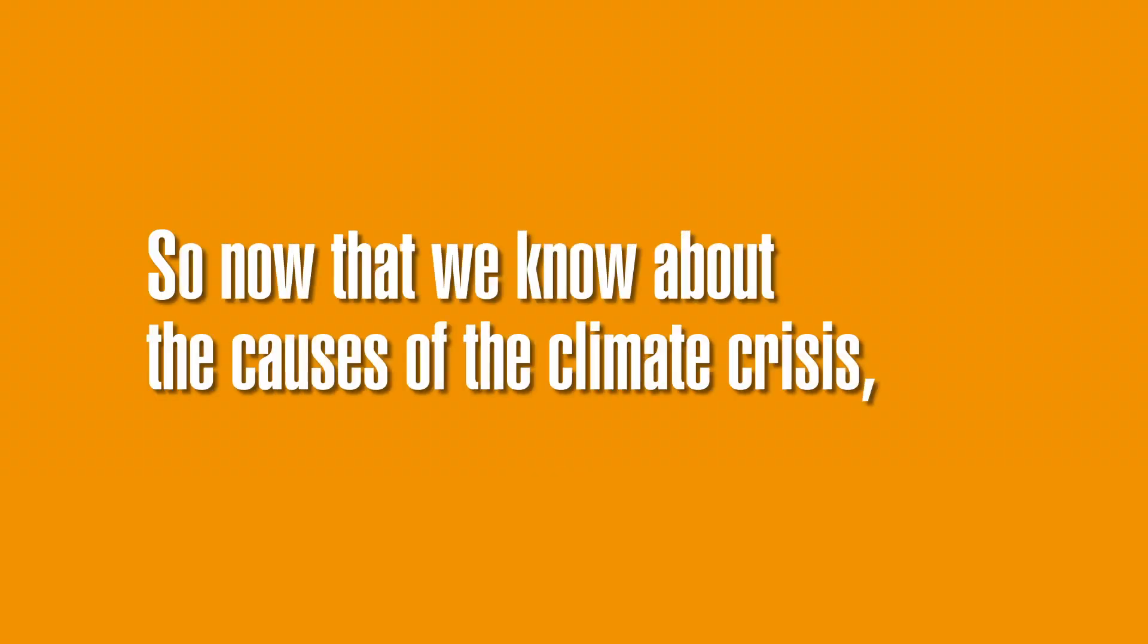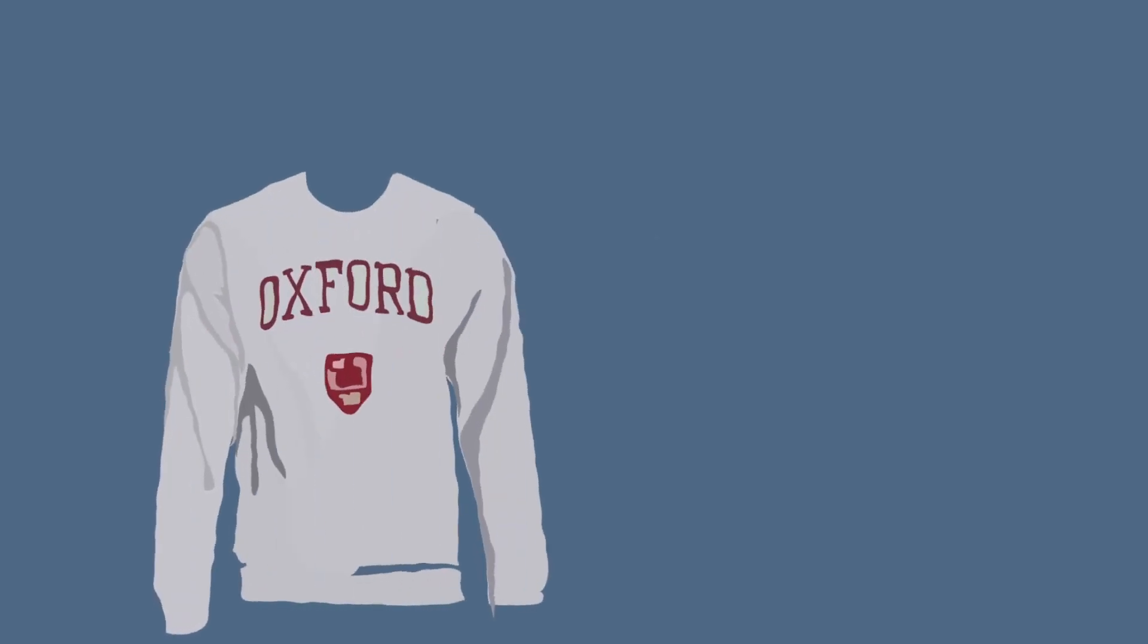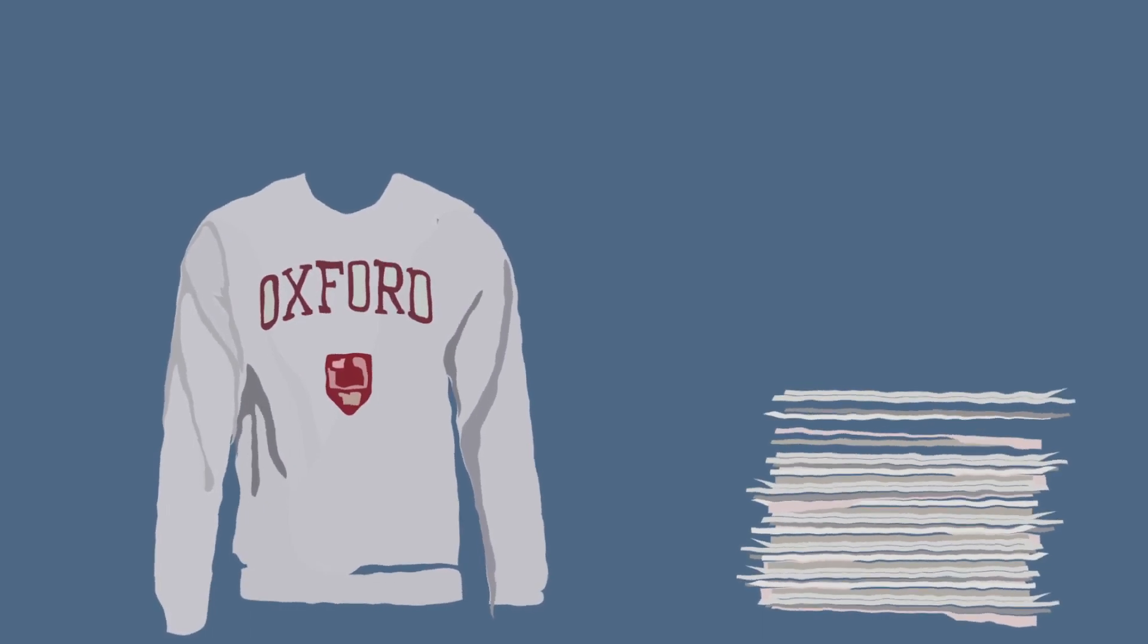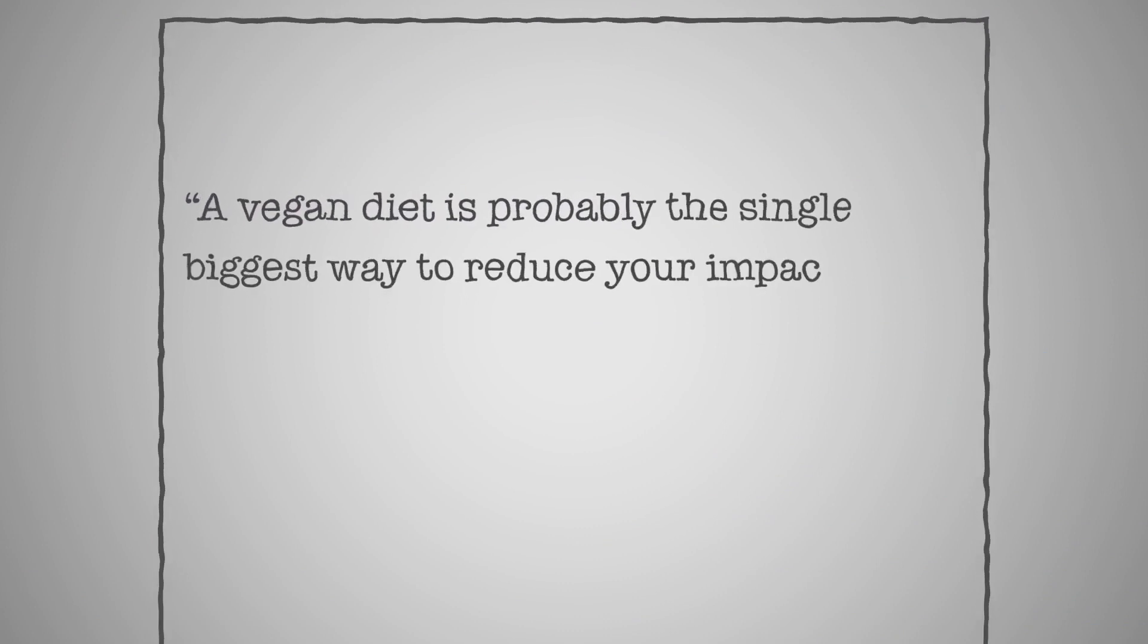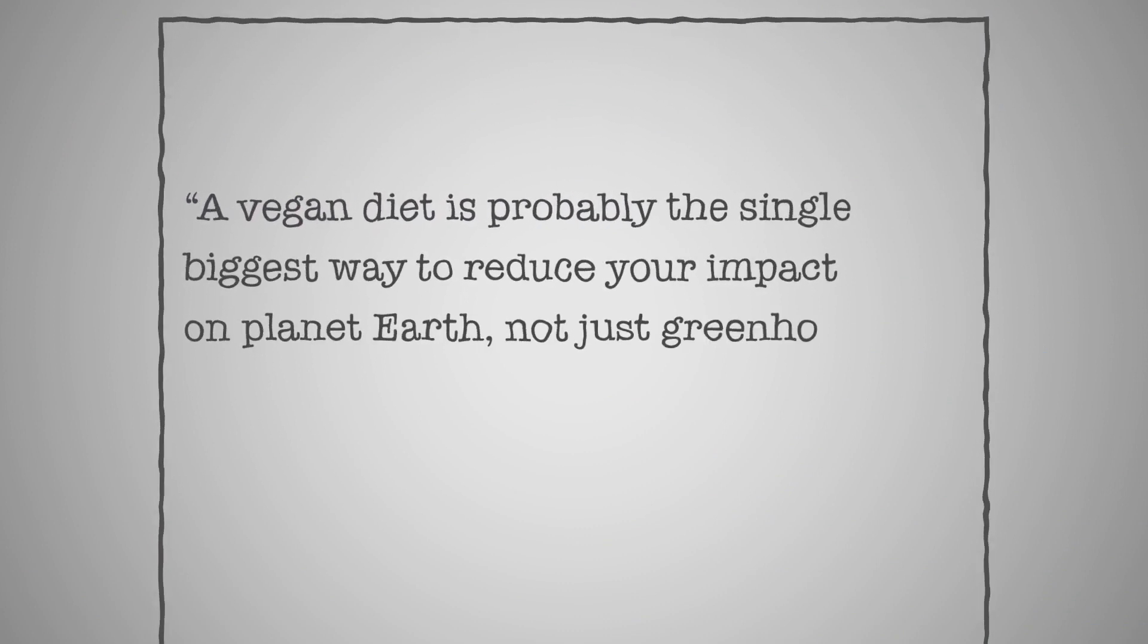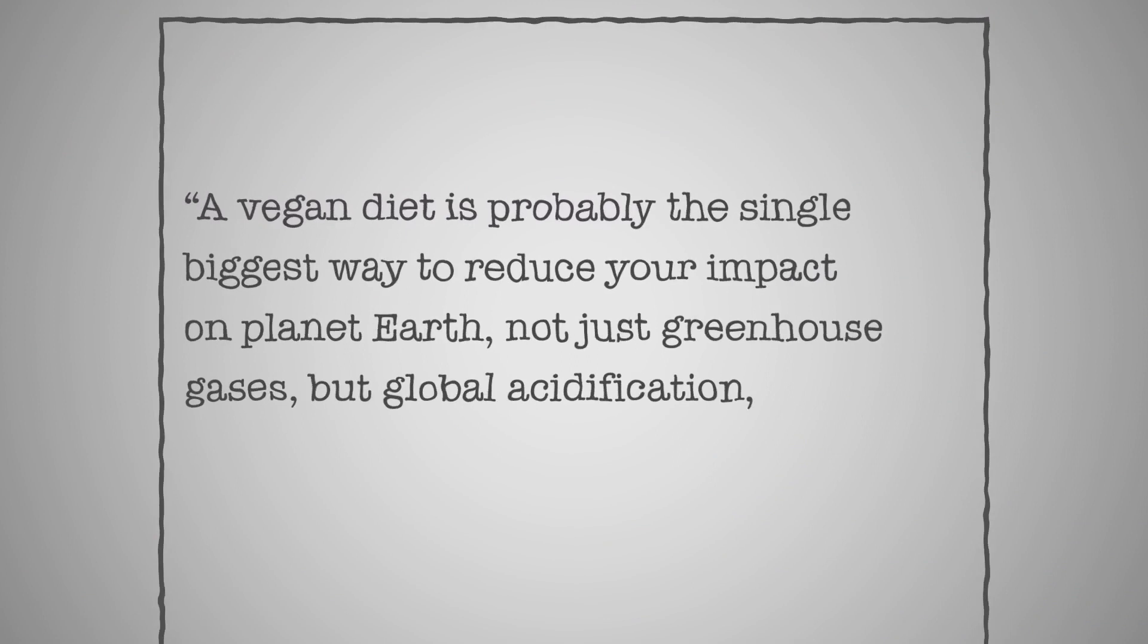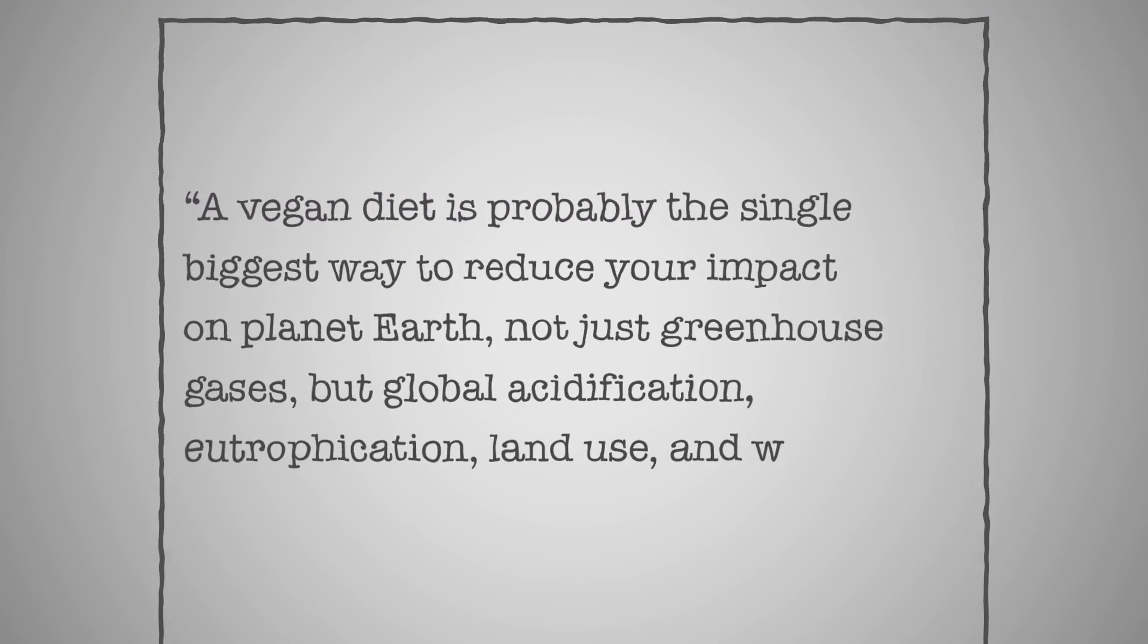So now that we know about the causes of the climate crisis, what can we do to stop it? Joseph Poore, a researcher at the University of Oxford who led much of the research on animal agriculture's emissions states: a vegan diet is probably the single best way to reduce your impact on planet Earth, not just greenhouse gases, but global acidification, eutrophication, land use, and water use.